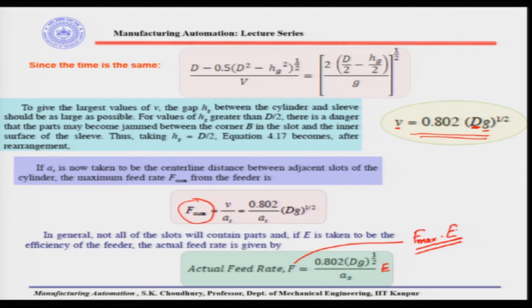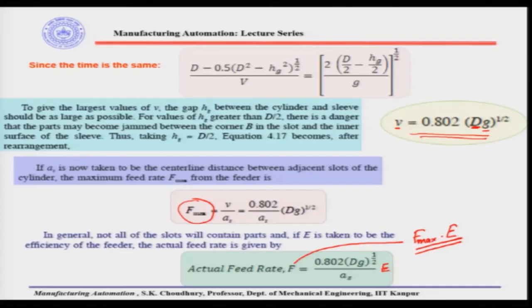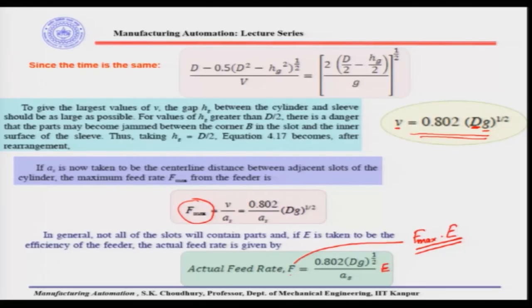The efficiency can be found experimentally by running the feeder and finding the average number of parts coming out. The efficiency is then multiplied by F_max to get the actual feed rate, which is of course less than F_max because F_max is the ideal situation. Since efficiency is normally less than 100%, the actual feed rate F is less than the maximum feed rate.